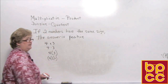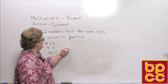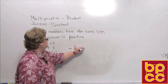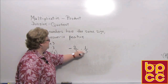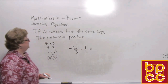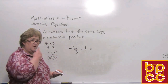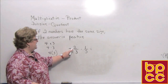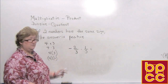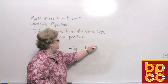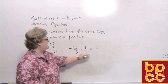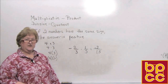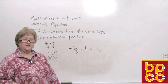Let's try a fraction. Let's say that we have a negative 2 thirds times a positive 1 fifth. In multiplication, we simply multiply the top times the top and the bottom times the bottom. A negative 2 times 1 is a negative 2, and 3 times 5 is 15. So our answer is a negative 2 over 15, or negative 2 fifteenths.